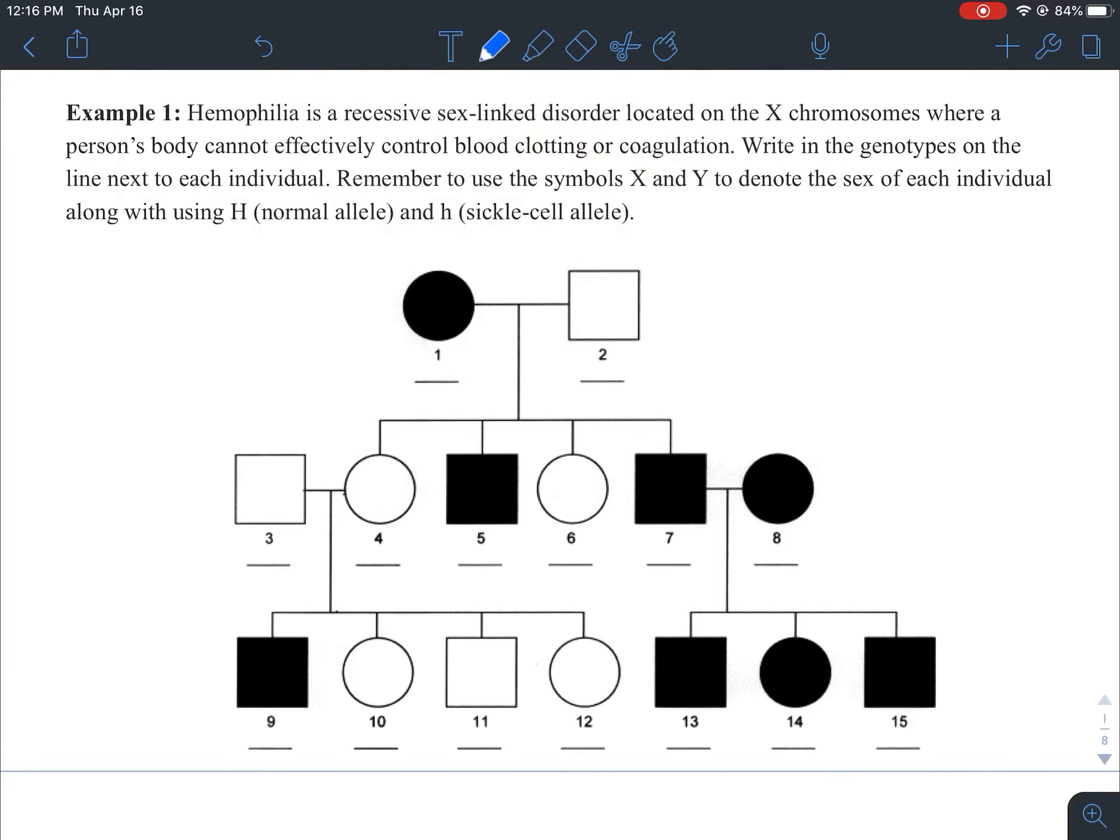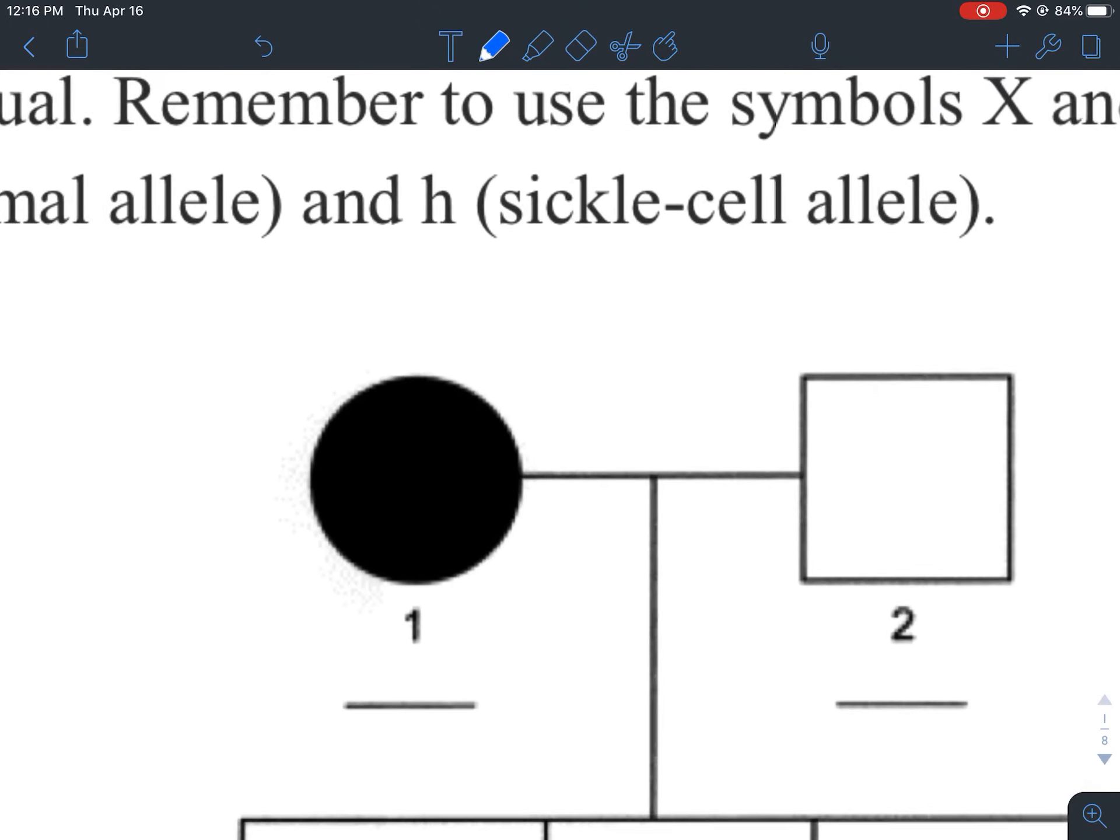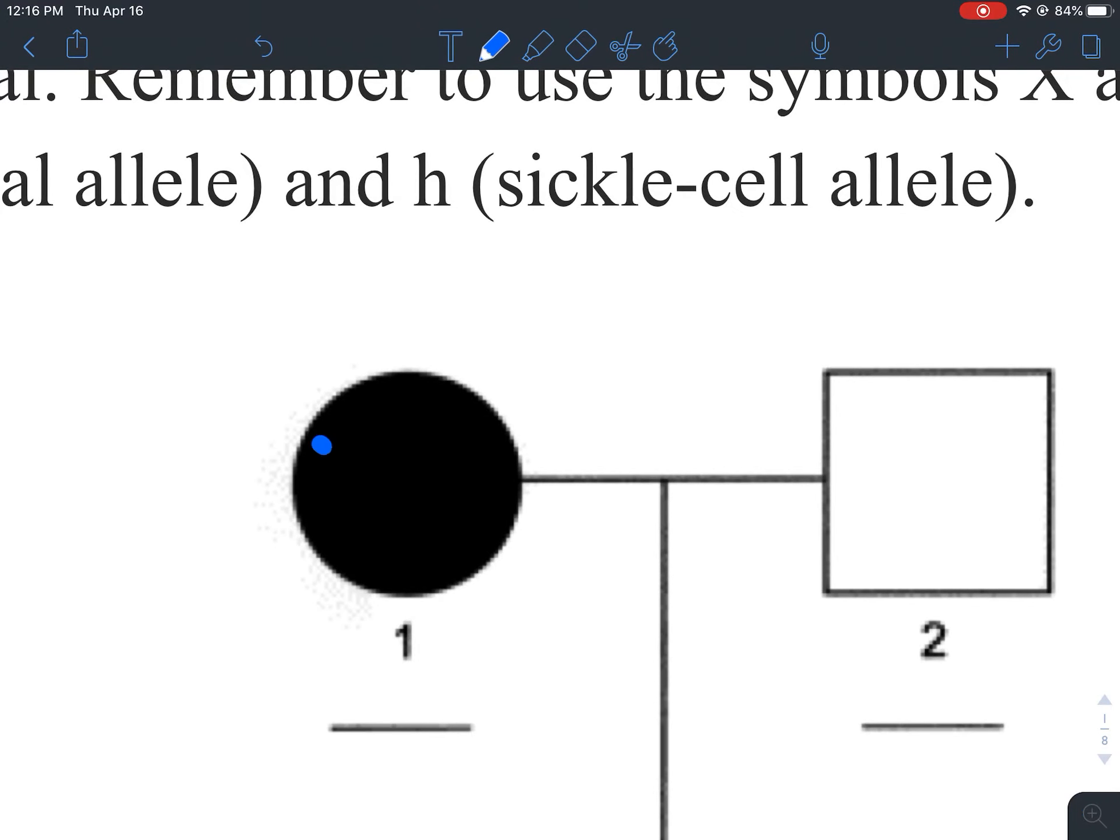So starting off with this mother at the top in this first generation, she is going to be X lowercase h, X lowercase h. She needs to have two copies of that basically dysfunctional or mutated allele in order for her to have the trait.